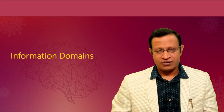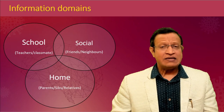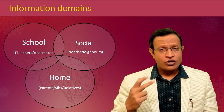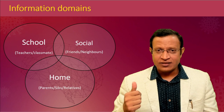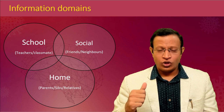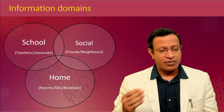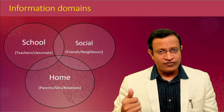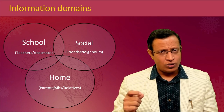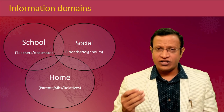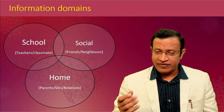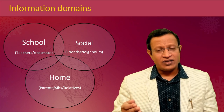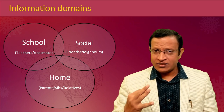There are three important information domains: home, school, and the social front — the three domains where children and adolescents spend maximum time. From home, you can collect information from parents, siblings (brother and sister), relatives, or any other caretaker. From the school front, teachers and classmates are valuable sources — and not only the school, but also tuition teachers. From the social front, how the child interacts with friends and neighbors is important.